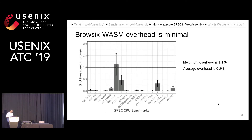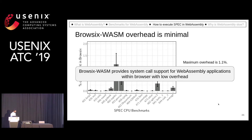The overhead of Browsix-Wasm was finally brought down to a maximum of 1.1%, and an average overhead of about 0.2% over the SPEC benchmarks. In summary, Browsix-Wasm provides a system call interface for WebAssembly applications with low overhead.